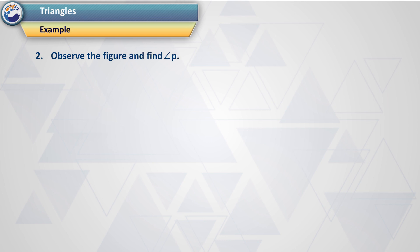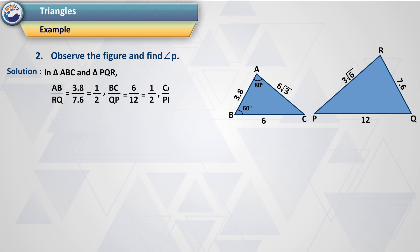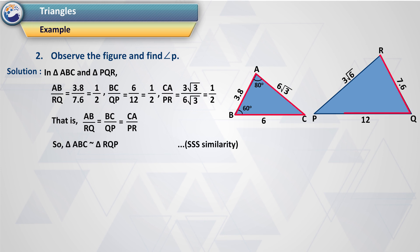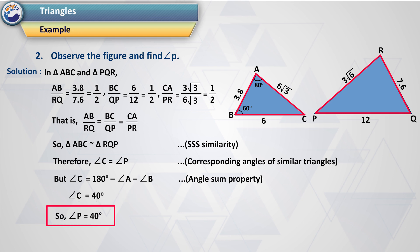Example 2. Observe the figure and find angle P. Solution: In triangle ABC and triangle RQP, AB/RQ = 3.8/7.6 = 1/2, BC/QP = 6/12 = 1/2, and CA/PR = 3√3/6√3 = 1/2. That is, AB/RQ = BC/QP = CA/PR, so triangle ABC is similar to triangle RQP by SSS similarity. Therefore, angle C = angle P (corresponding angles of similar triangles). Angle C = 180° − 80° − 60° = 40°. So angle P = 40°.